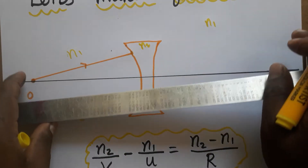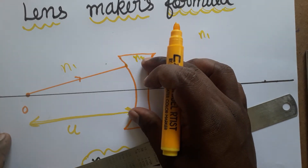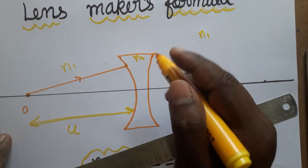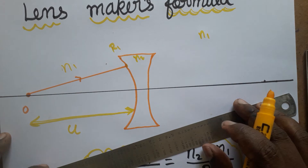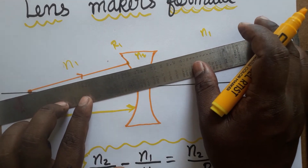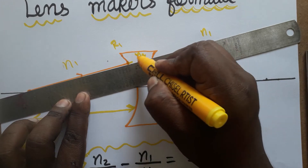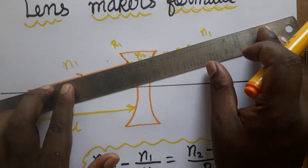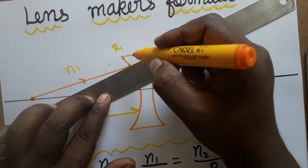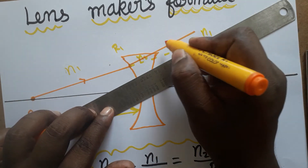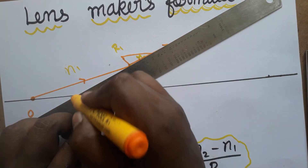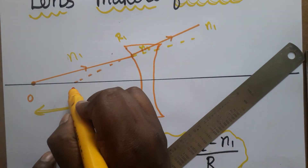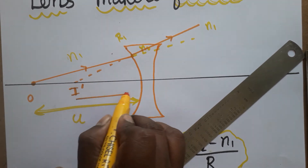A concave lens is called a divergent lens — the ray is going to diverge away from the normal. When the light is incident at the first surface, which has radius of curvature R1, the light is refracted at the first surface and deviated away from the normal. So the image will be formed at this point. A concave lens is going to produce a virtual image.